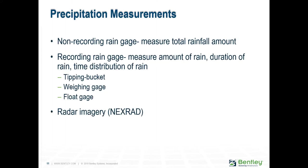Measurement errors can occur in both non-recording and recording gauges. These errors, in almost all cases, tend to underestimate the actual amount of rain that fell. Errors fall into four categories: observer error, rain gauge location, rain gauge density, and wind effects.